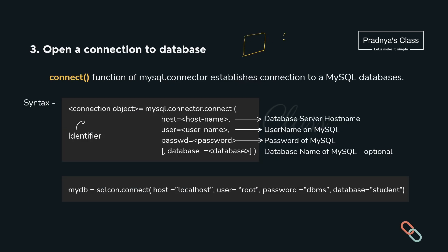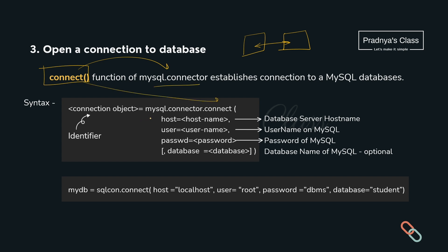Now we are establishing the connection between MySQL and Python. For that we will be using the connect function of the mysql.connector module. The connect function takes four parameters: the first one is host, the second is user, the third is password, and the fourth is database. We need to keep in mind that host will be localhost and user will be root — these two values will be fixed. But what about the password? This is the password which you entered while installing the MySQL software.